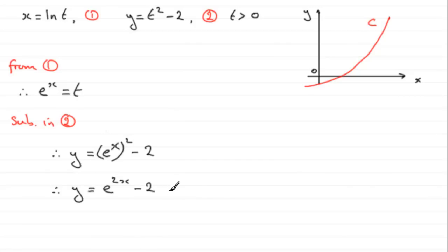So there's your Cartesian equation, a relationship that links x to y without your parameter t in it.